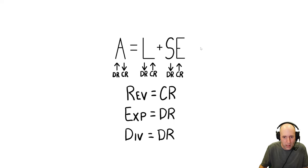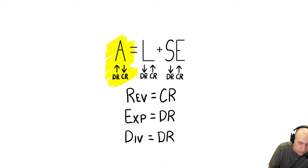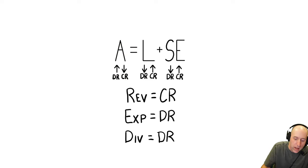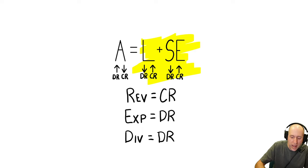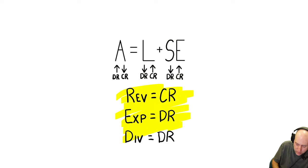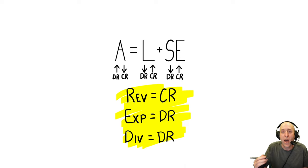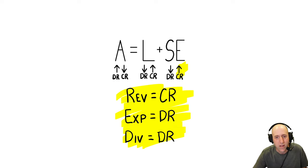One last thing before we get going: I just want to remind you about how journal entries work. If I want to make an asset increase, I debit the asset. If I want it to decrease, I credit it. Liabilities and equity are the exact opposite — credits make them go up, debits make them go down. Revenues, expenses, and dividends are all sub-accounts of shareholders' equity. Revenues always help shareholders' equity, so revenues take a credit. Expenses and dividends always hurt shareholders' equity, so they always take a debit.